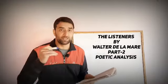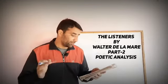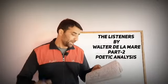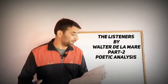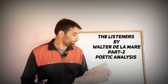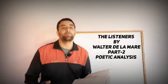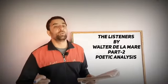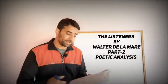Anaphora کی بات کریں تو line number 5 اور 7 میں اس کا use ہوا ہے — 'and a bird flew out of the turret' اور line 7 میں 'and he smote upon the door'۔ اس کے علاوہ line number 15 اور 17 میں بھی anaphora کا use ہوا ہے — 'stood listening in the quiet of the moonlit' اور 'stood thronging the faint moonbeams on the dark'۔ Anaphora کا مطلب ہے when the writer uses a particular phrase at the beginning of successive lines.